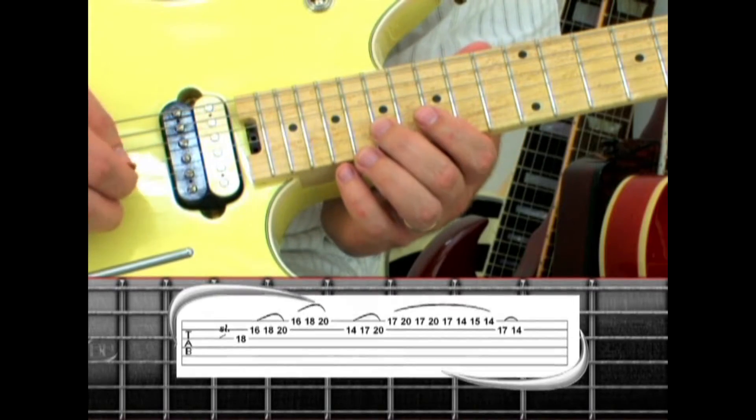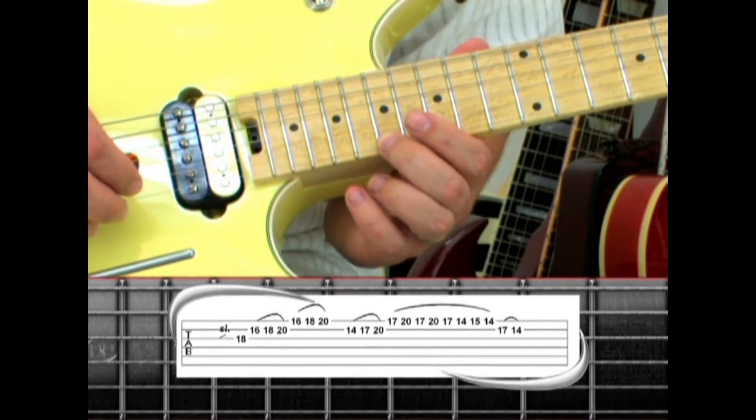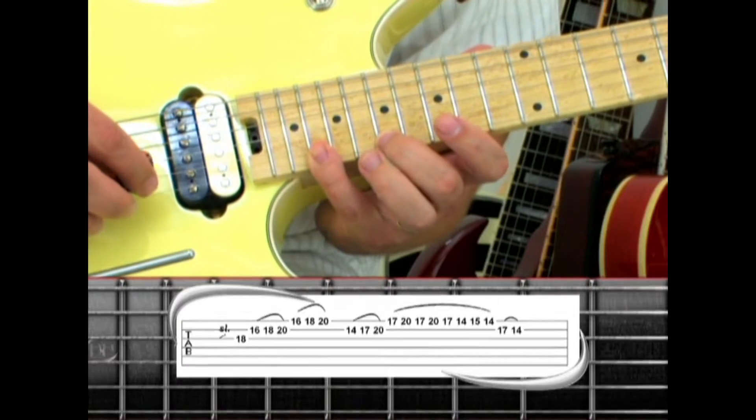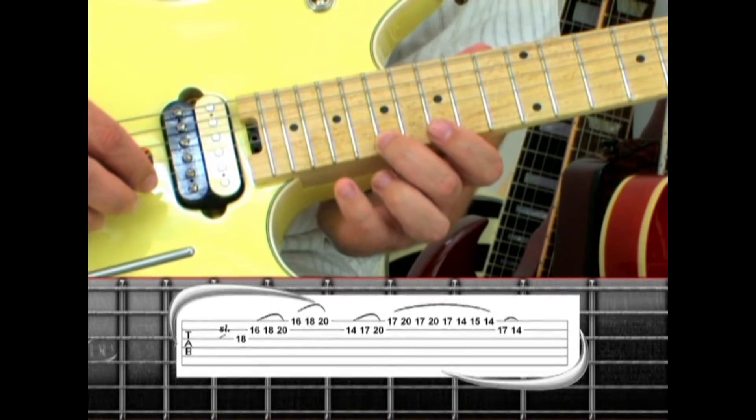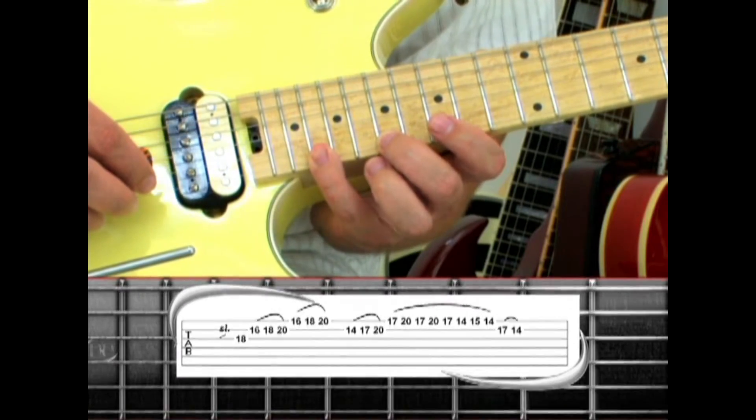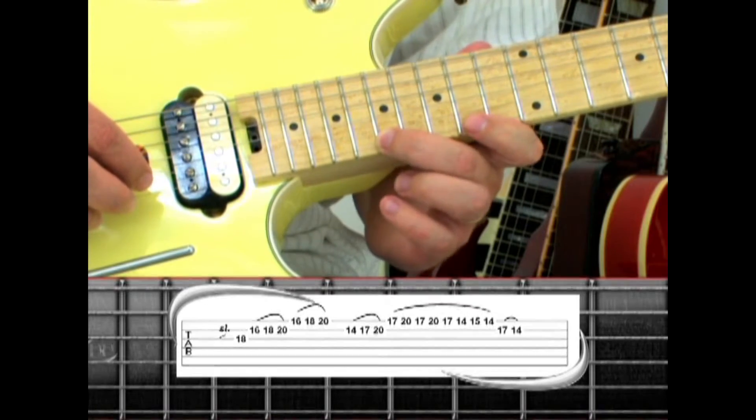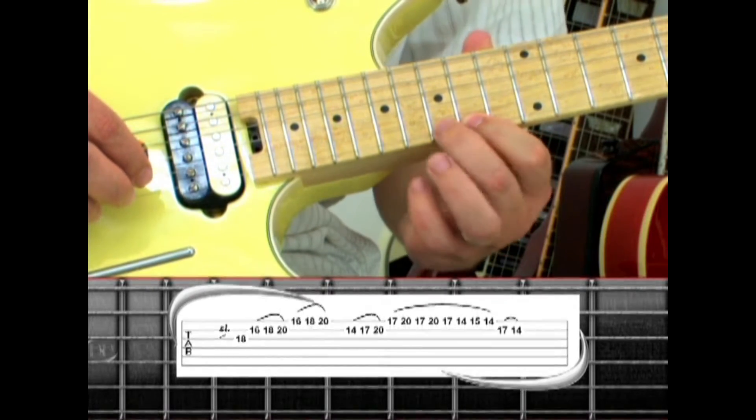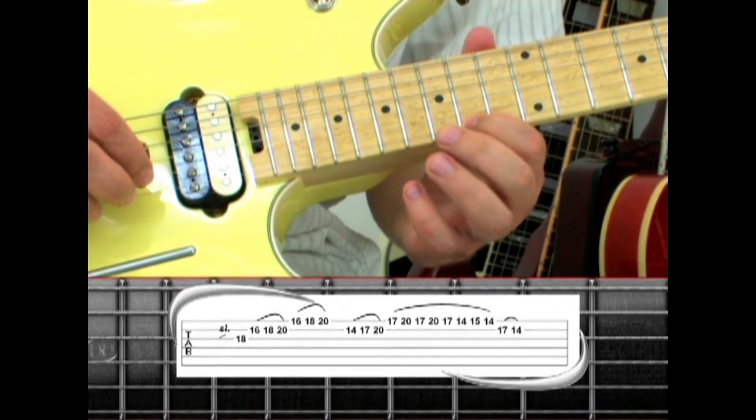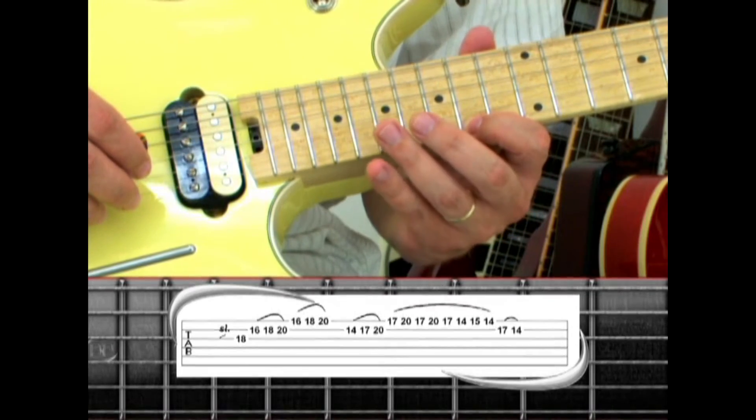Play the first string 17 with the middle, hammer the pinky to 20, pull off to 17, hammer to 20, pull to 17, 14, hammer to 15, pull to 14, on the second string pull 17 to 14.